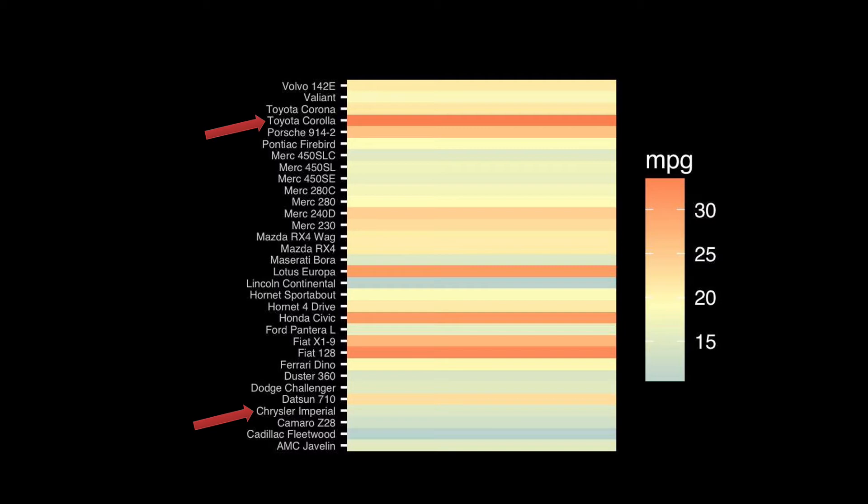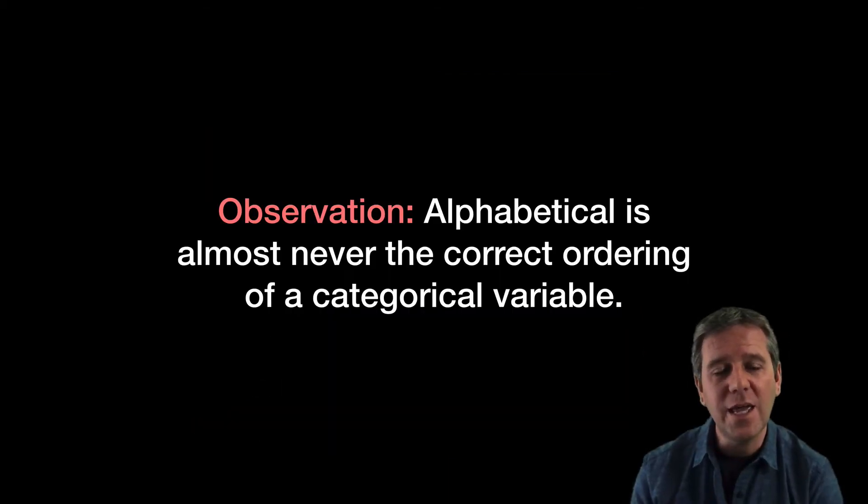If we compare a Chrysler Imperial, a big tank of a thing, to a Toyota Corolla here towards the top, we can still see there's a difference because their colors are so strikingly different. We could have probably figured that out from domain knowledge. But if we didn't know anything about cars—if these were genes, for example—we'd be asking our reader to do a lot of work.